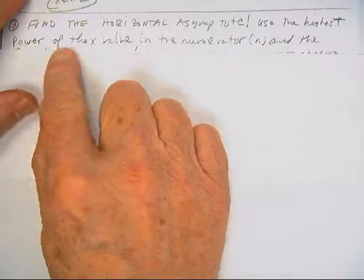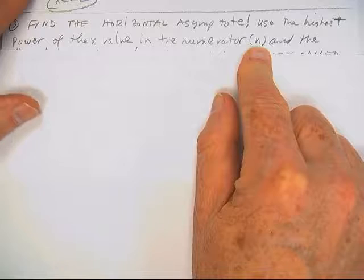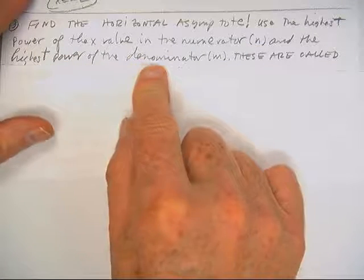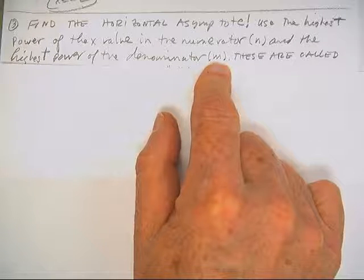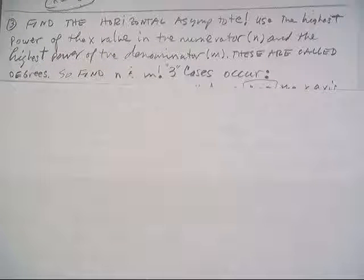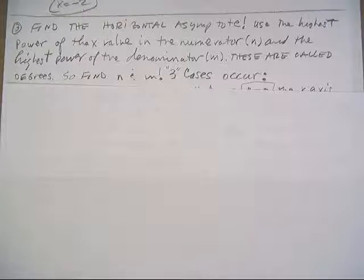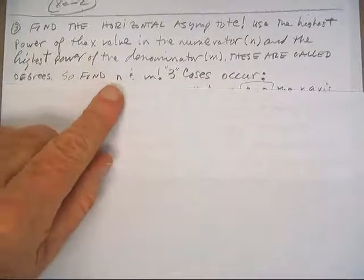So the way we want to find it is we want to use the highest power of the x value in the numerator. We're going to call it n. And we want to use the highest power of x in the denominator. We're going to call it m. So these are called degrees. Degrees are your largest powers. This is largest power of the top, largest power of the bottom. So find n and m.